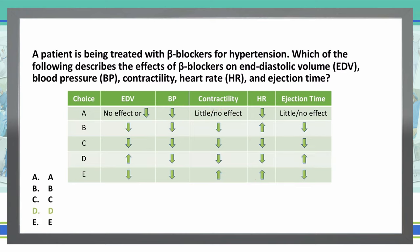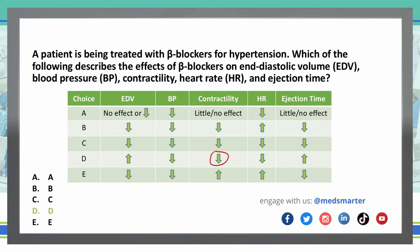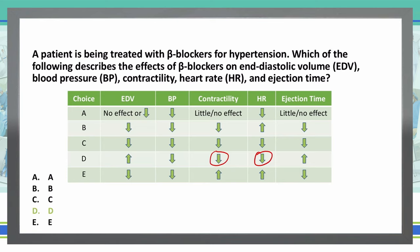D is the correct answer. Beta blockers will decrease contractility and decrease heart rate, giving us decreased oxygen consumption. That allows for an increased end diastolic volume due to a longer diastolic filling time, and an increased ejection time to get all of that end diastolic volume out.